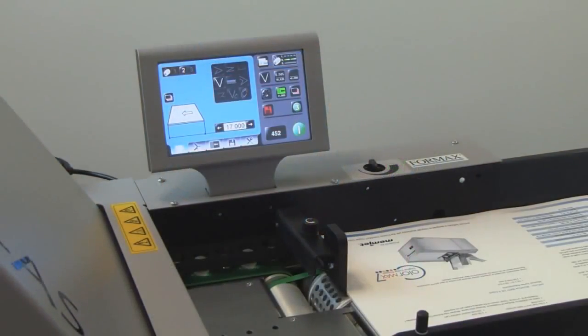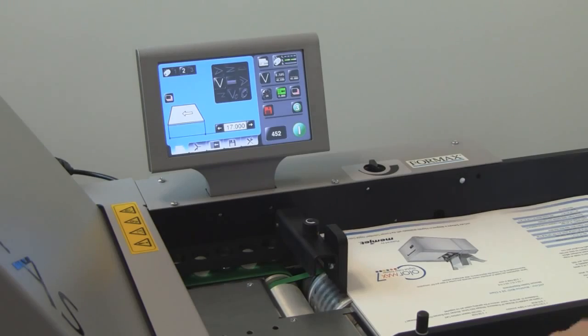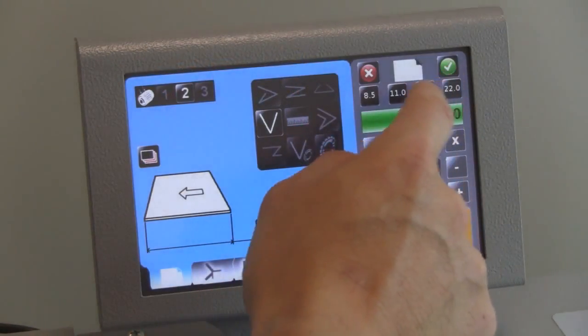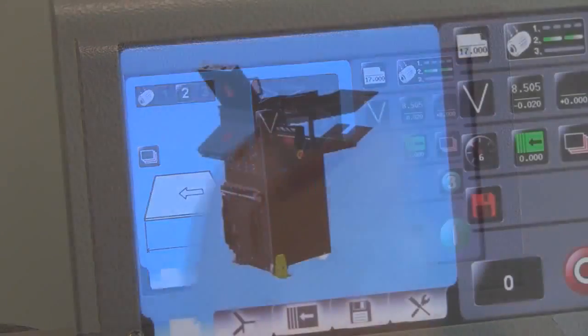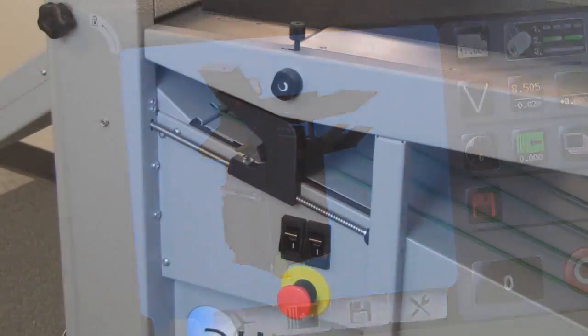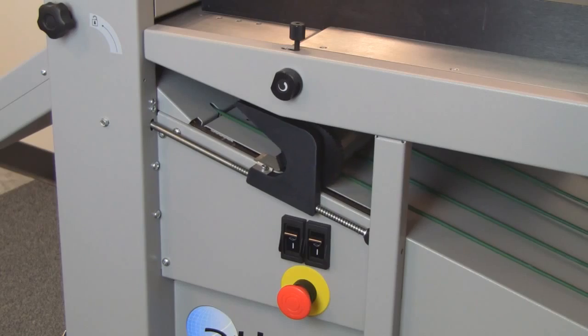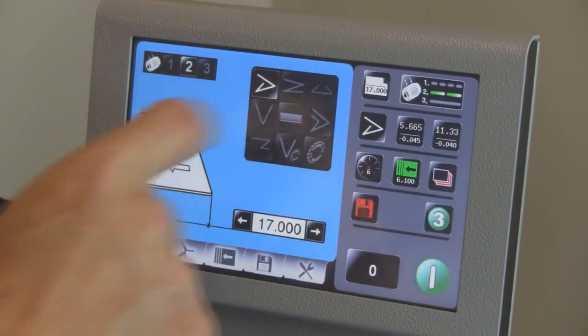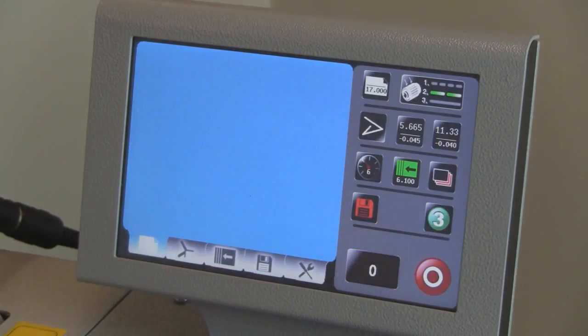With your in-feed table set, simply select the desired fold type and paper size. The fold plates and outfeed stacker wheels will adjust automatically. Switching between folds is a snap. Simply select the new fold type and press enter.